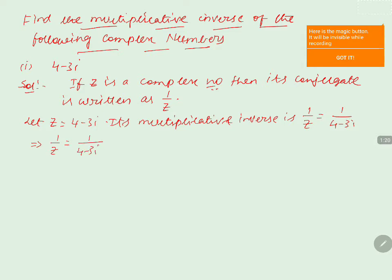Now we will take the conjugate of 4 minus 3i. Here in 4 minus 3i, the real part is 4, the imaginary part is minus 3i.